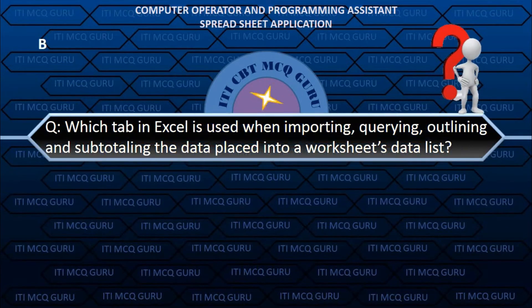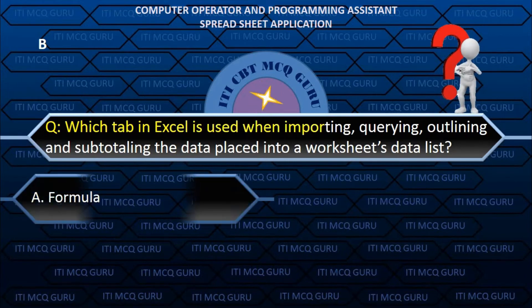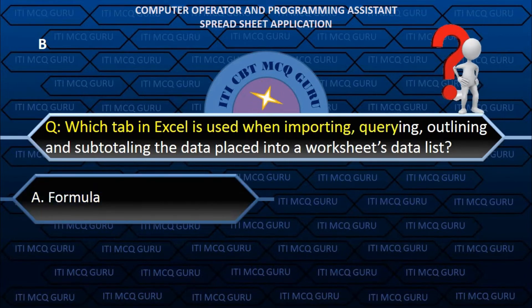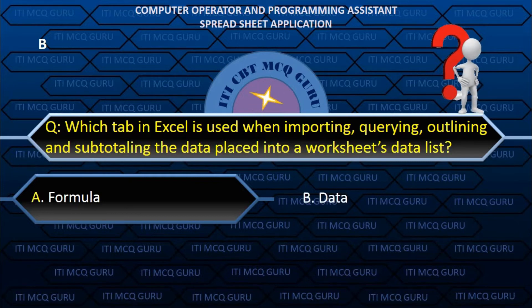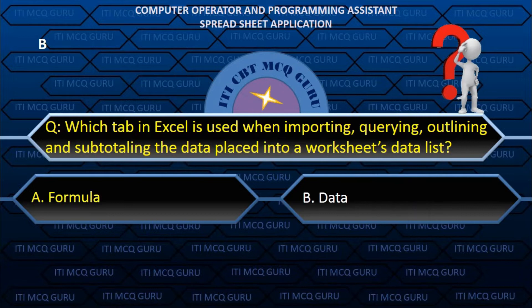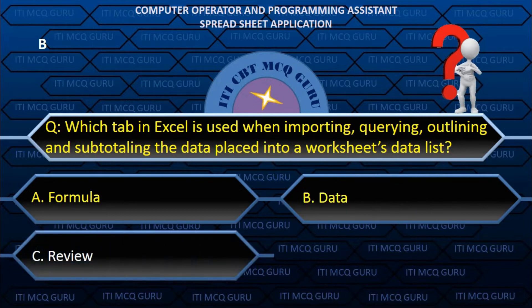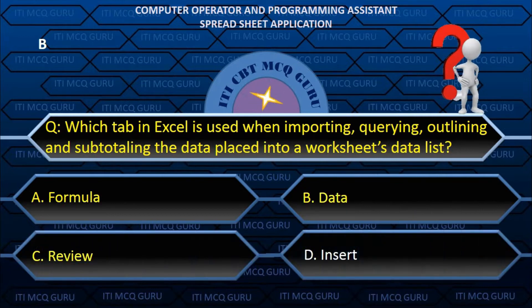Which tab in Excel is used when importing, acquiring, outlining and subtotaling the data placed into a worksheet data list? B. Data.